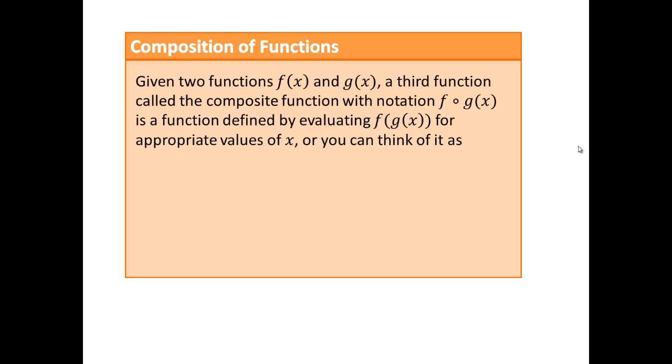So let's take a look. If you have two functions, f of x and g of x, we can form a new function referred to as a composite function by looking at this notation, f composite g of x. This little circle here represents composition of these two functions. So again, remember how I'm reading it, f composite g of x.